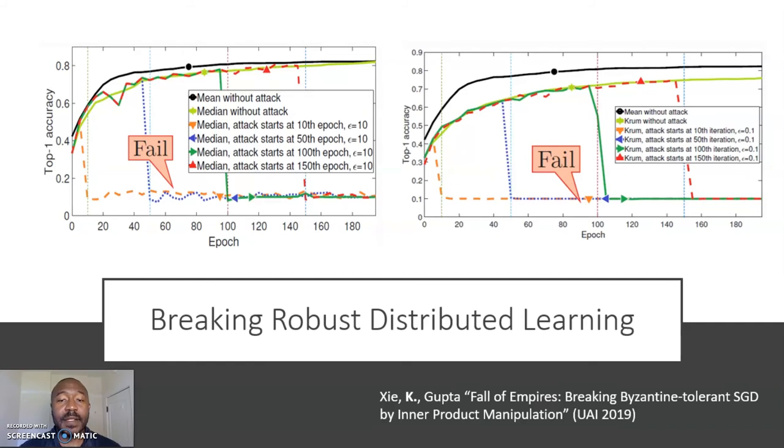Here's an example showing how exploiting this observation breaks both median and crumb. This is in cases that satisfy all the assumptions in their primary theoretical results. In these examples, the robust aggregation is effective for standard attacks. That is, median and crumb are effective when they're standard attacks, but they ultimately break down when using inner product attacks. And this is easily activated by the attacker at any epoch.